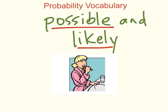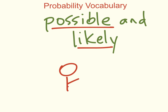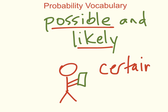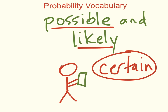Your mom or dad telling you to brush your teeth before bed — that's probably going to happen, so we say that's possible and likely. Mr. Seaman going home and reading a book is also possible and likely because Mr. Seaman reads books a lot. We don't say it's certain because if something comes up and I don't read a book, it's not guaranteed. But because there's a really good chance it'll happen, we say it's possible and likely.